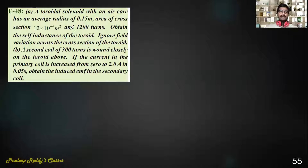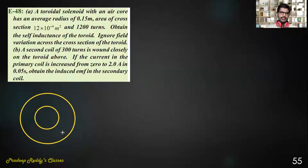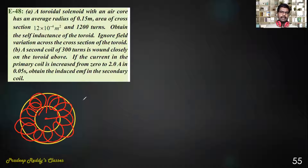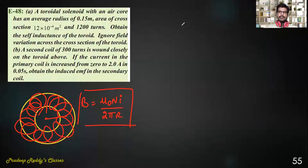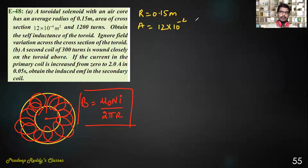Next problem: a toroidal solenoid with an air core. A toroidal solenoid has turns wound around it. The magnetic field due to this toroidal solenoid is B = μ₀NI / (2πR). The average radius is given as 0.15 meter, area of cross section A = 12×10⁻⁴ meter square, and the number of turns is 1200. We need to find the self inductance of the toroid.